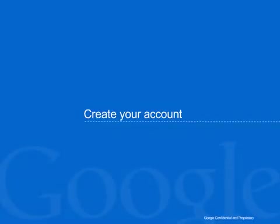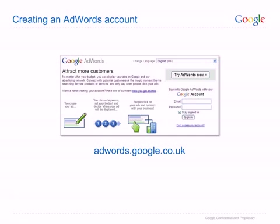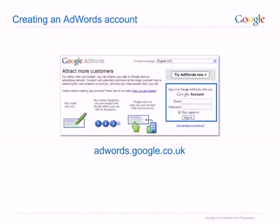So now that you understand the basics, let's create your AdWords account. Creating an AdWords account couldn't be simpler. Visit adwords.google.co.uk and click on 'Try AdWords now'. You will then be guided through the steps needed to create your account, specifying an email address and password that you will use to log into AdWords. This is also the page you will need to visit each time you log into AdWords. If you use bookmarks, you may want to bookmark this page so you can easily find it later.